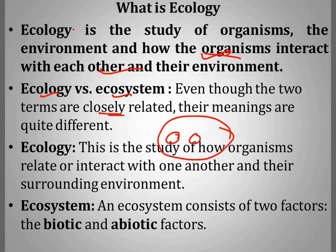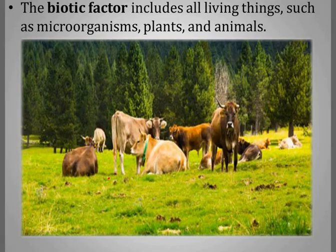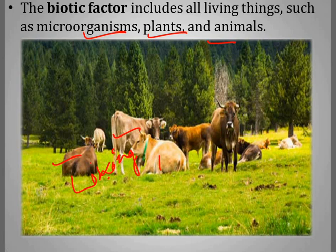An ecosystem consists of two factors: biotic and abiotic factors. Biotic factors are all living organisms — plants, animals, microorganisms. These are what we call living things, and that is what biotic factors refer to.